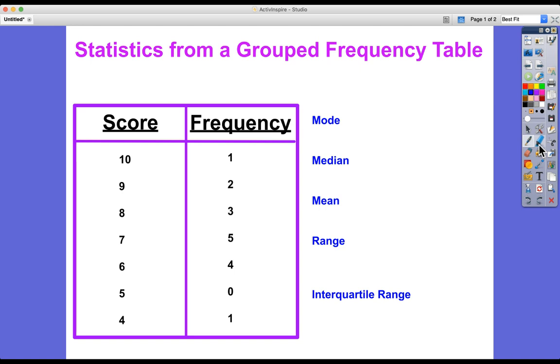Hi, today we're going to find how to find statistics from a grouped frequency table. Here we can see some scores that are listed. There could be scores in a quiz, for instance. And here are the number of students who achieved each score.